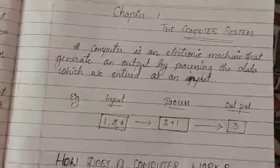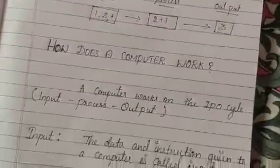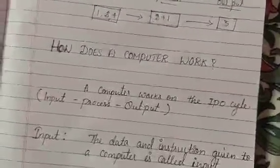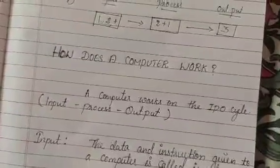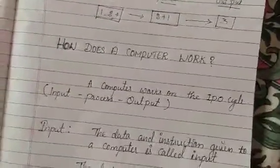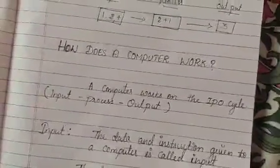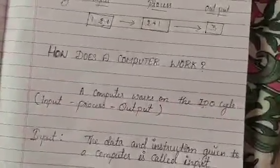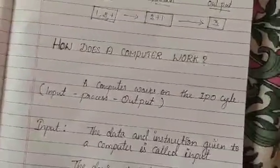Let's study how a computer works in detail. A computer works on IPO cycle. IPO means I for input, P for process and O for output.